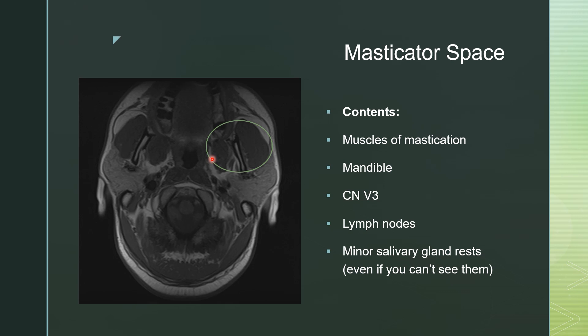For cranial nerve V3, you can have schwannomas. For lymph nodes, you can have lymphoma or you can have reactive lymphadenopathy, and the minor salivary gland rests can give you salivary gland tumors.